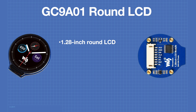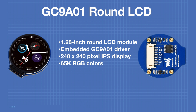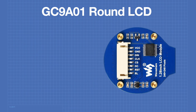The GC9A01 is a round 1.28-inch liquid crystal display module. The name GC9A01 actually refers to the embedded driver integrated circuit on the module, not to the display itself. This is a 240 by 240 pixel IPS display capable of displaying 65,000 RGB colors. The GC9A01 uses a four-wire SPI bus interface. The rear of the display has a connector for the SPI bus, and the connections are as follows.